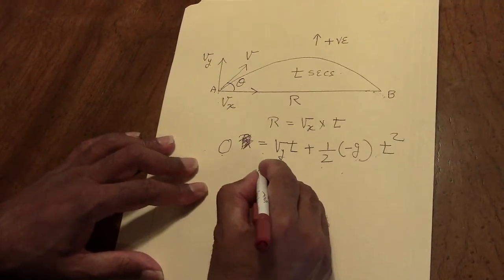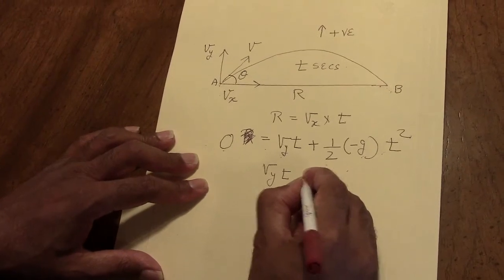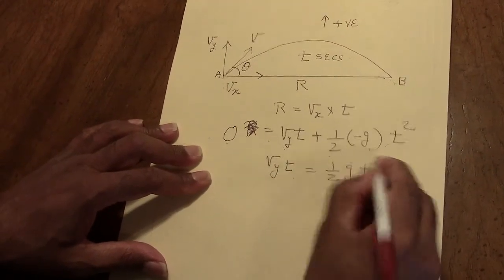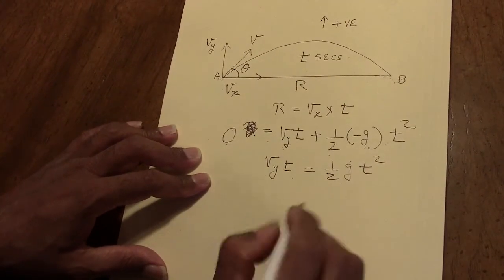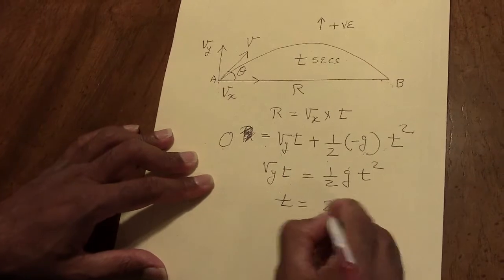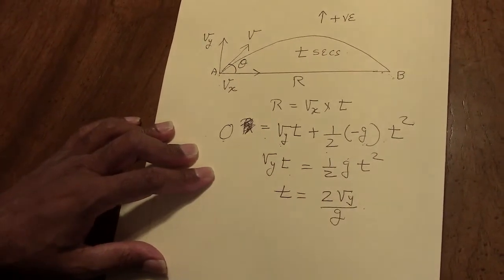Therefore, Vy t equals half gt squared, or t equals 2 Vy over g.